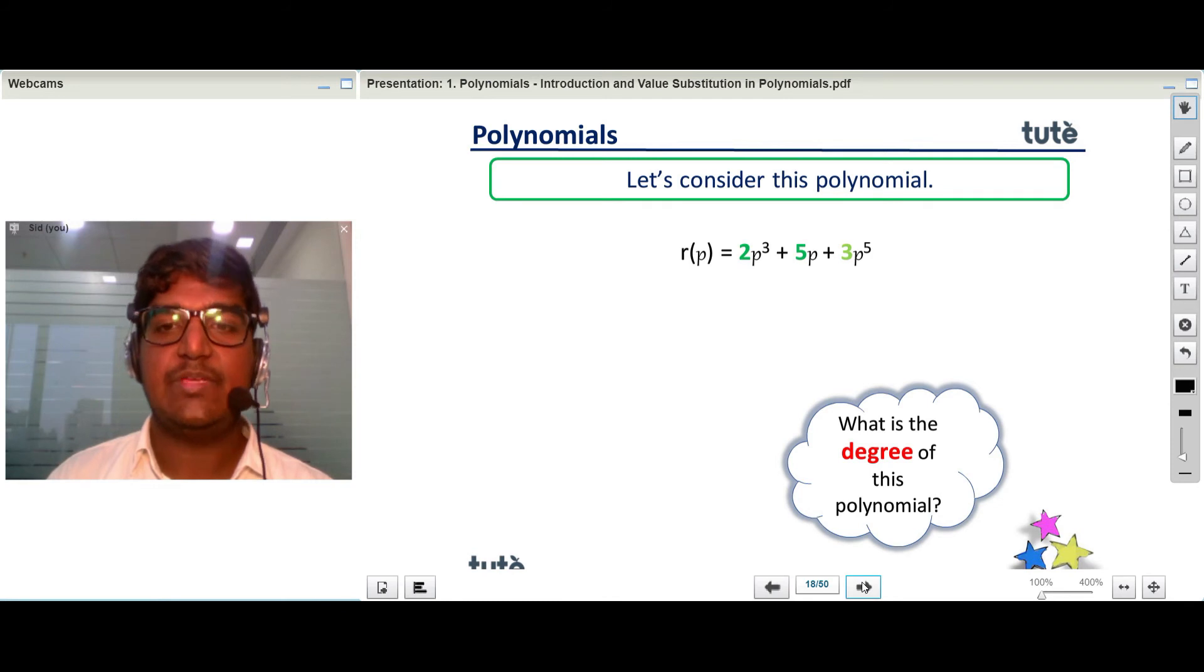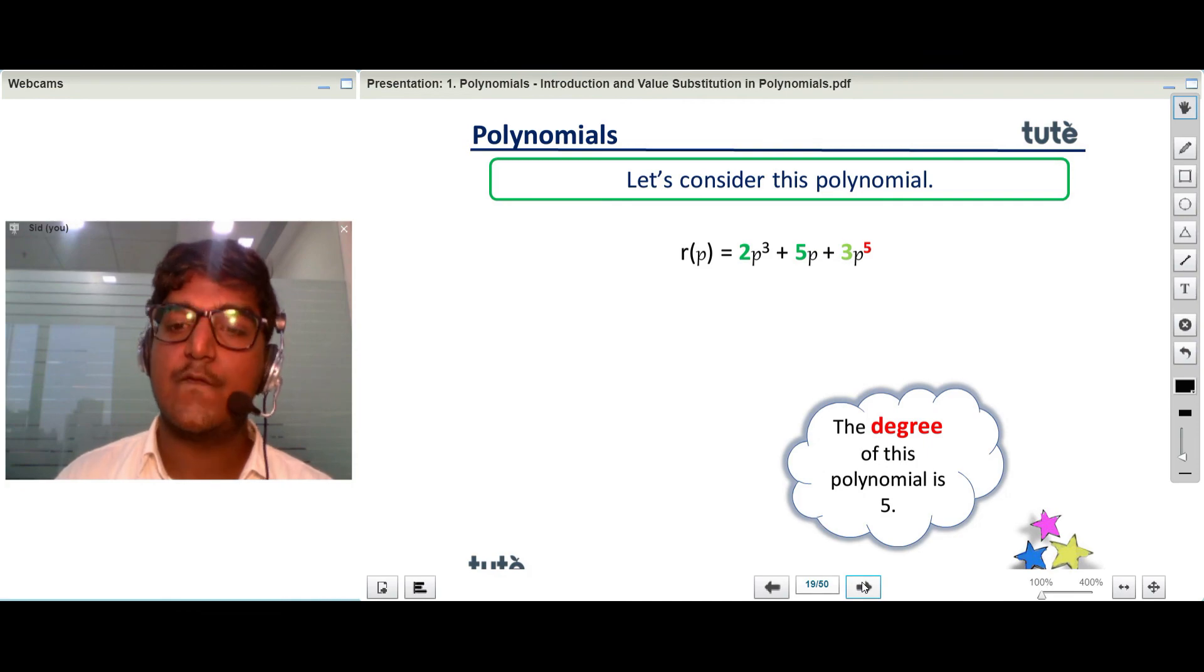Let's consider r(p) = 2p³ + 5p + 3p⁵. What is the degree of this polynomial? In this case, the highest power is 5. Therefore, the degree of this polynomial is 5.